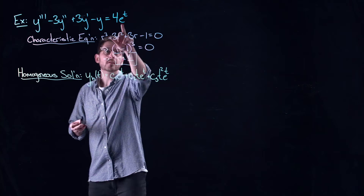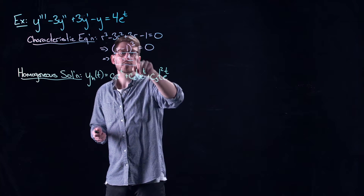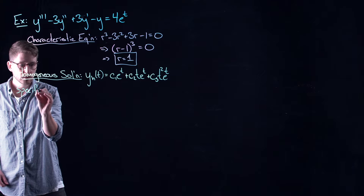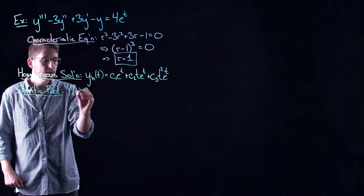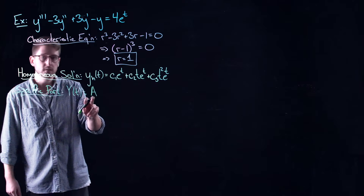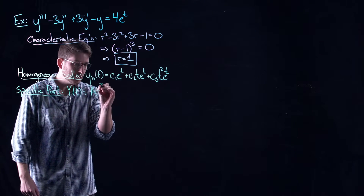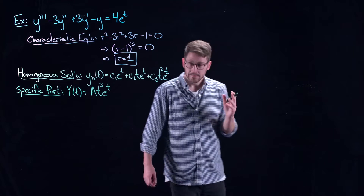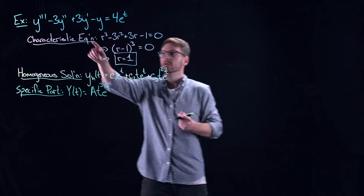Now for the non-homogeneous equation, we've got an issue: the right-hand side 4e^t has the same exponent as our characteristic equation gave us. So the specific part — the part that solves just the inhomogeneous equation, which we call capital Y — is going to have an undetermined coefficient A, and to get away from all these repeated roots I need t³e^t. I need to go up one more order of t, giving me Y = At³e^t. That will allow me to identify the specific solution.